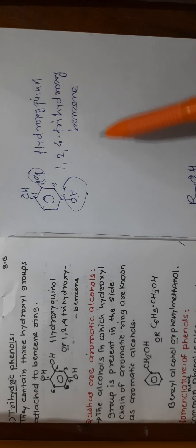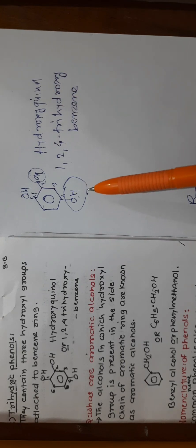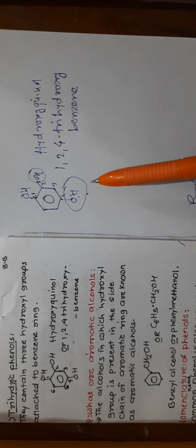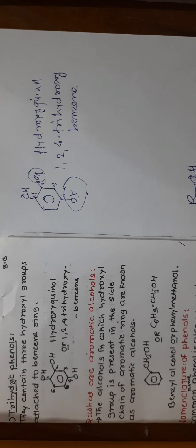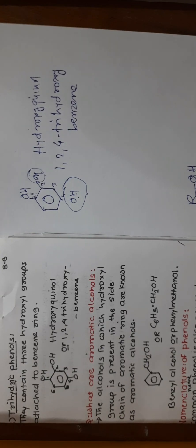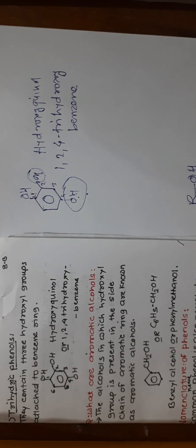So to summarize, phenols are classified as monohydric phenols, dihydric phenols, and trihydric phenols, depending on the number of OH groups present.